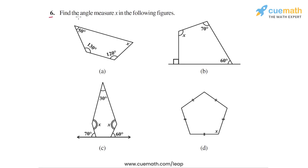In question 6 we have to find the angle measure x in each of the following figures. We are given four figures a, b, c, and d. In each figure there is an unknown angle: in the first figure it's angle x, in the second figure as well, in the third figure two angles are both marked x, and in the fourth figure we have a regular pentagon with the angle at one vertex marked as x. In each case we have to find the value of x.